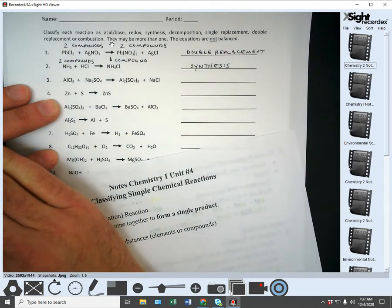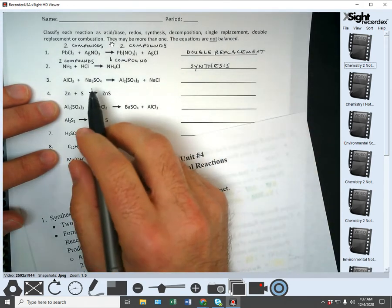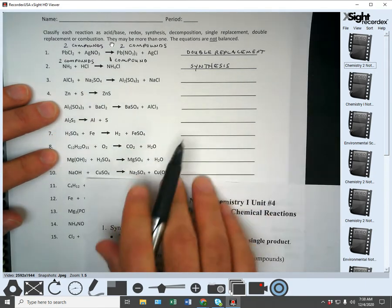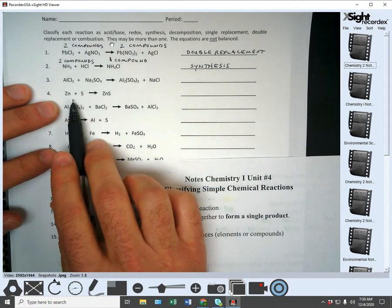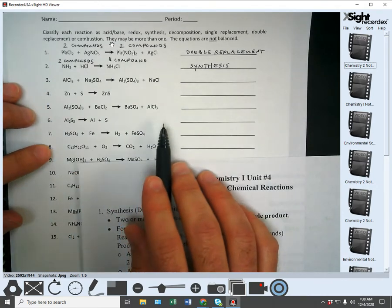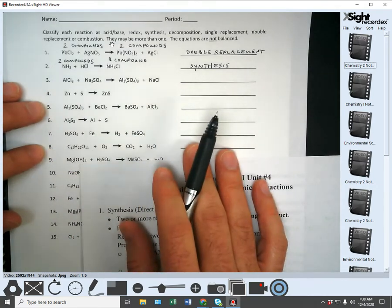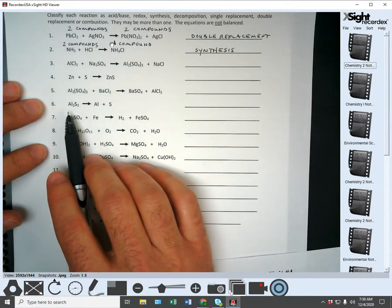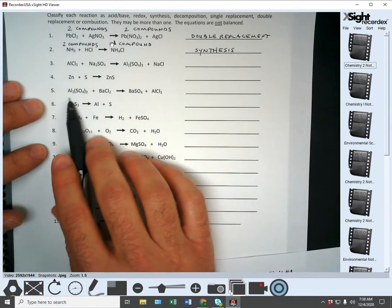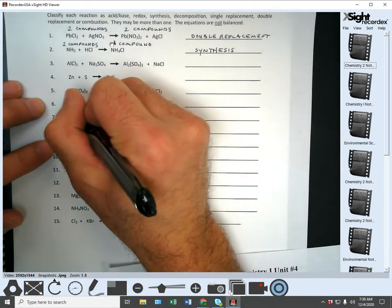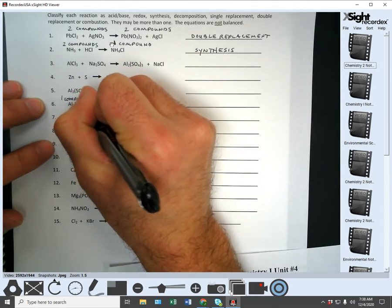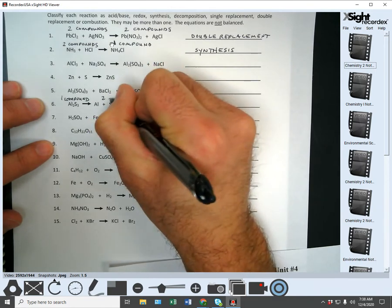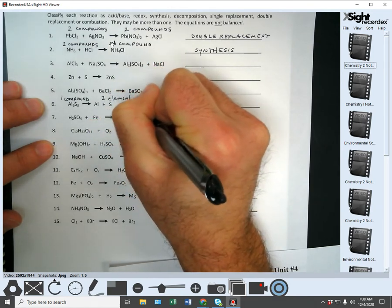All right. Let's see. Let's go to here, number six. One compound. And we've got two elements.